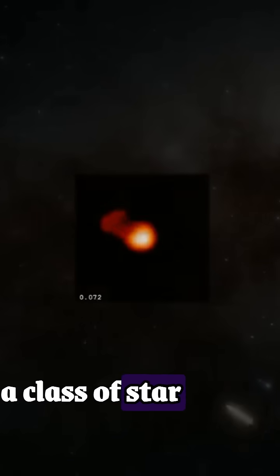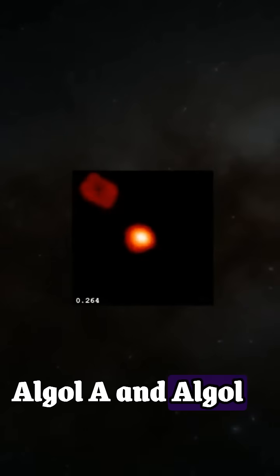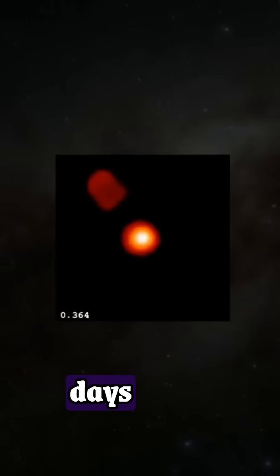Algol is actually a class of star system called an eclipsing binary, in which two stars, we'll call Algol A and Algol B, are bound together orbiting each other every 2.867 days.